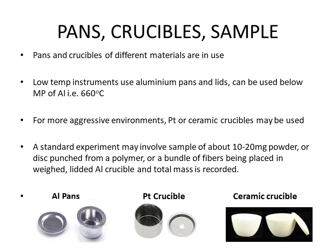Pans and crucibles of different materials are in use. If operating at low temperature, aluminium pans and lids can be used below the melting point of aluminium, which is 660°C. If working at higher temperatures, platinum or ceramic crucibles must be used because their melting points are higher. Here you can see the aluminium pan with lid, the platinum crucible, and the ceramic crucible.